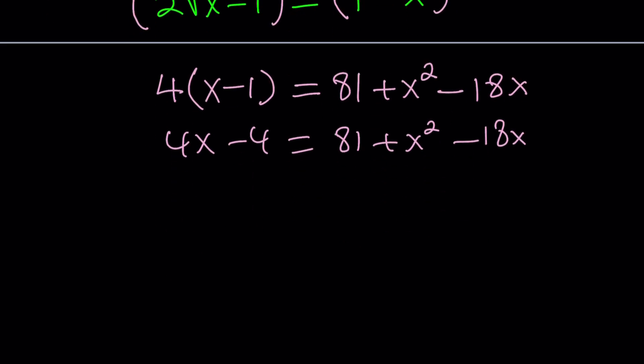Let's put everything on the same side. We want to use the side where x squared is positive on the right hand side. If you subtract 4x, we already have minus 18x. That gives us minus 22x. And if you bring the negative 4 over, like add 4 to both sides, you're going to end up with 85.